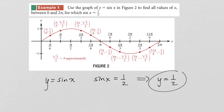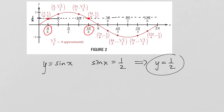If you look at the y-axis, 1/2 is right here. If I draw a horizontal line, you can see it will intersect the curve twice — here and also here at that particular height. So the values of x that produce a sine of 1/2 are these two values: pi over 6 and 5 pi over 6.